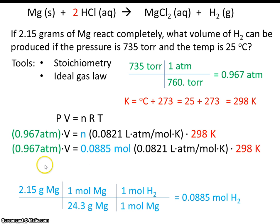So now we know everything: pressure, moles, R, and temperature. Now we simply have to solve for V. So volume would be 2.24 liters of hydrogen gas.